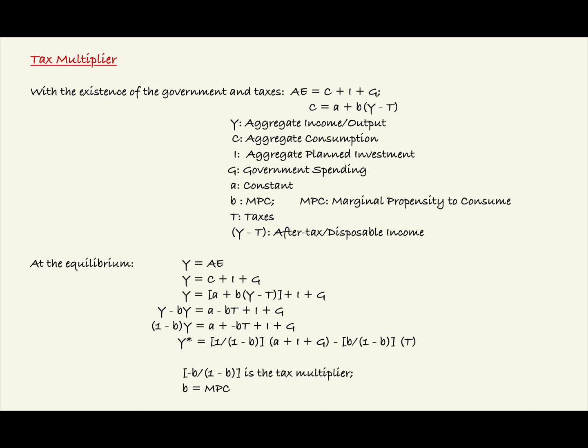Now let's break down all of these variables. Y is the aggregate income or output. C is aggregate consumption. I is aggregate planned investment. G is government spending. A is a constant. B is the MPC, or marginal propensity to consume. T represents taxes. And the quantity of Y minus T that we see in the aggregate consumption equation is the after-tax or disposable income.